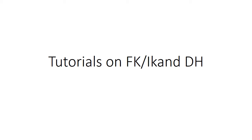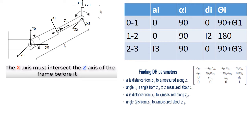Assalamualaikum warahmatullahi wabarakatuh. This is the third robotics problem related to forward and inverse kinematics using the Denavit-Hartenberg convention for modeling. The robot we are talking about for this tutorial has three degrees of freedom: one revolute joint, another prismatic joint, and a third revolute joint. This is the tip of the robot tool. We would like to find the DH table and the transformation matrix for this problem.